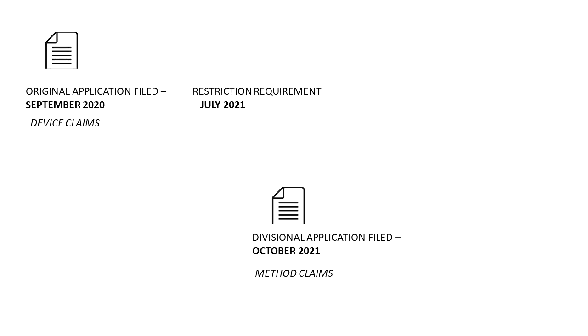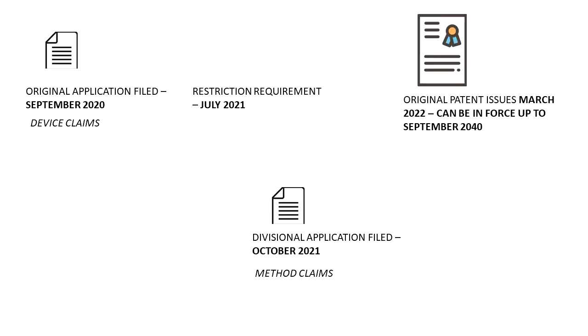But what if you want to try to get patent protection for both the method claims and the device claims? A common approach is to file a divisional application. So let's say we do that in October of 2021. This divisional will be very similar to the original application but with the other set of claims — in this case, the original application had the device claims, and my divisional application will have the method claims.